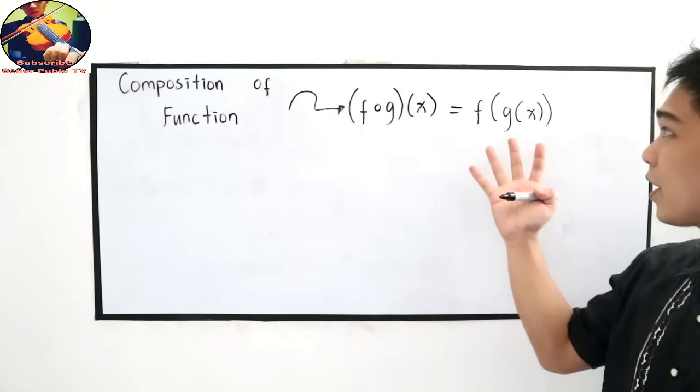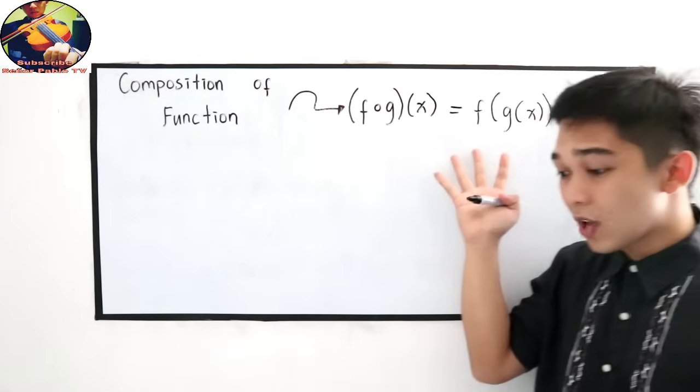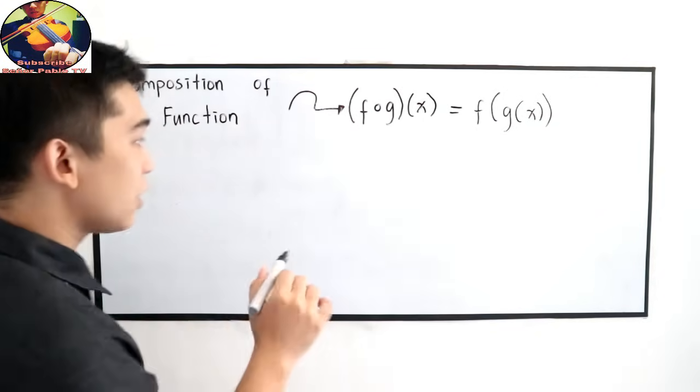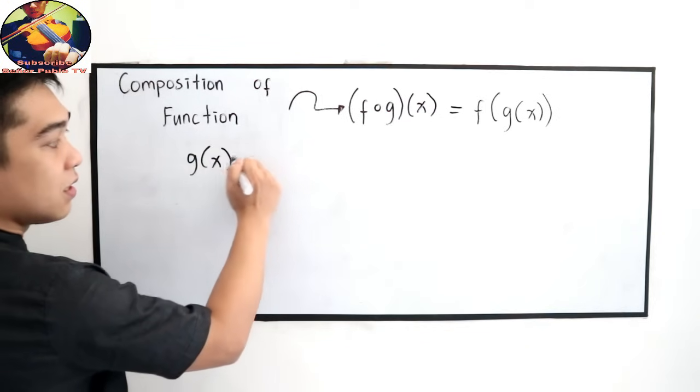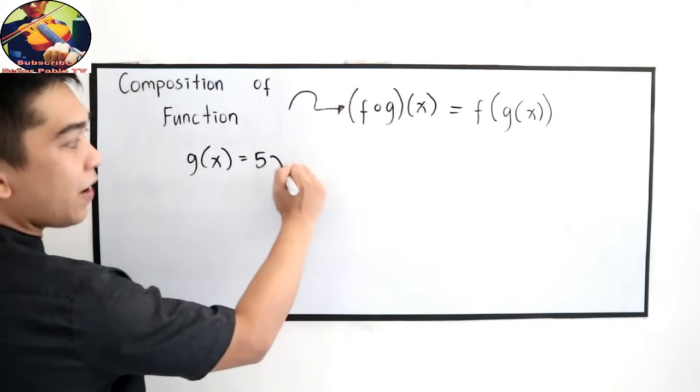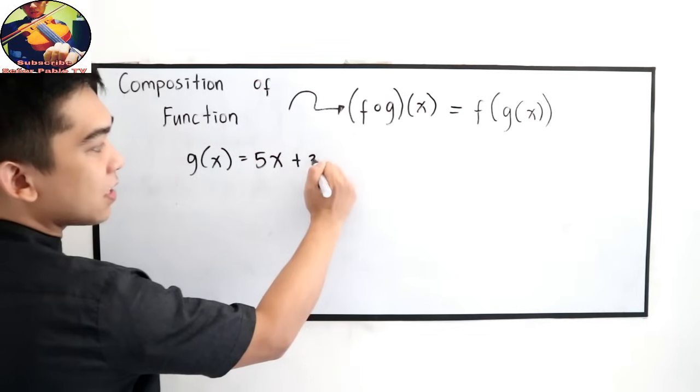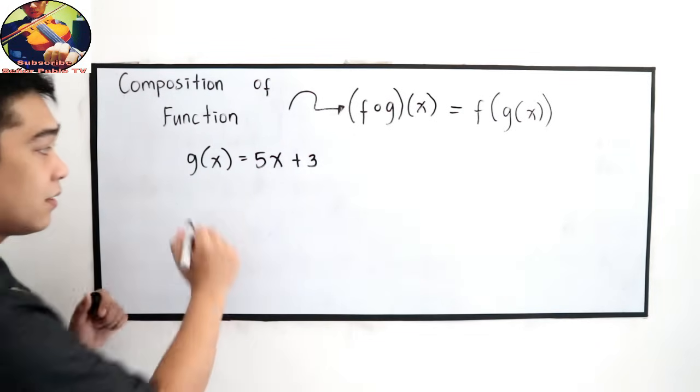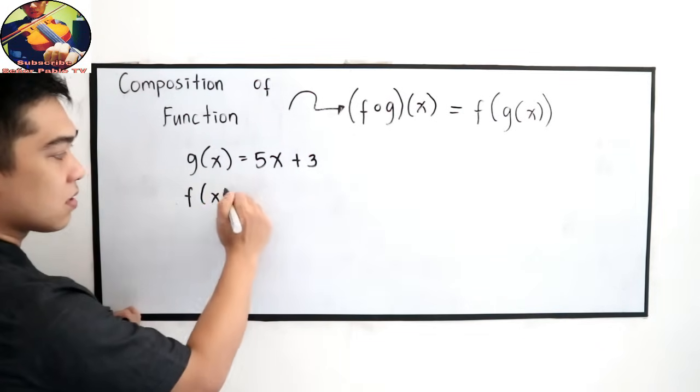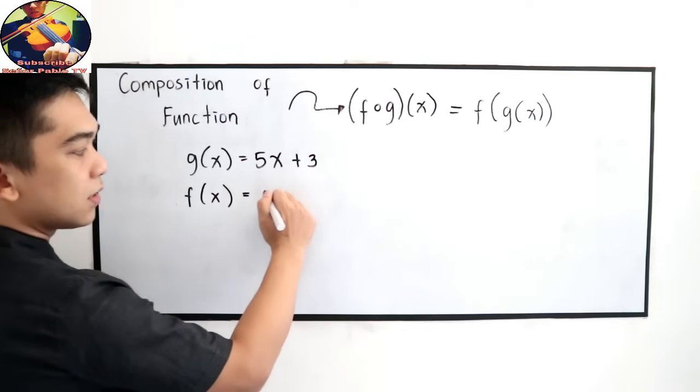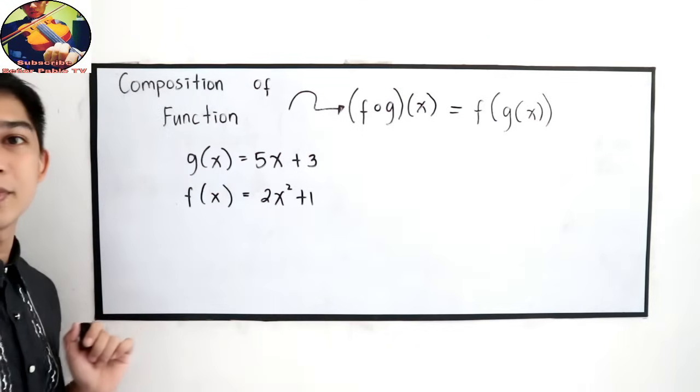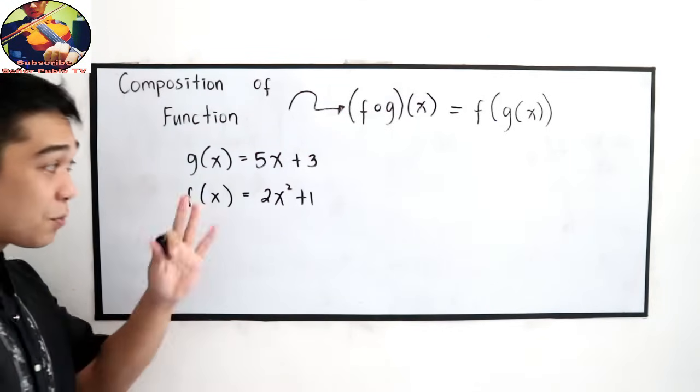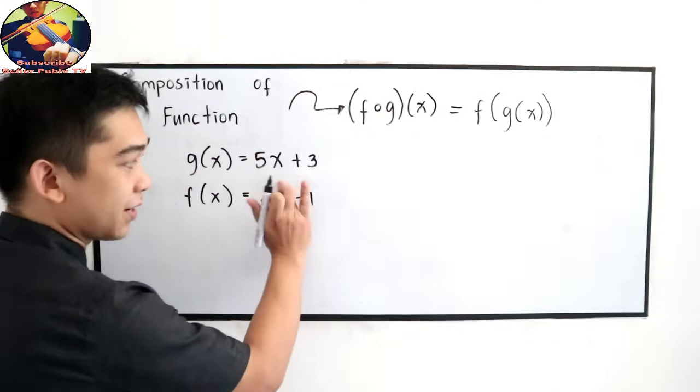So how are we going to use this? Let's say we have g of x is equal to 5x plus 3, and f of x is equal to 2x plus 1. So let's start with the basic. Let's remove the square, just that for now.